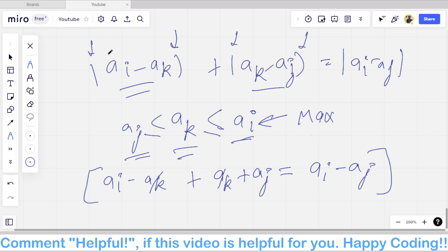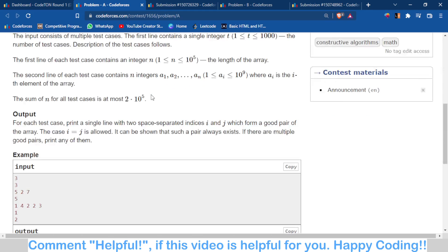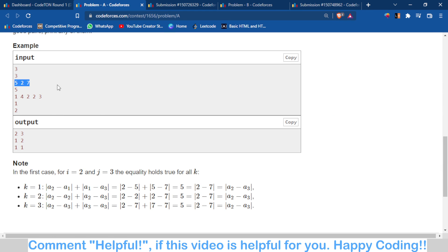In which case? When ak is always less than ai and greater than or equal to aj. So if we take ai as the maximum number of the particular array and if we take aj as the smallest number of the particular array, then we can do this problem very easily.